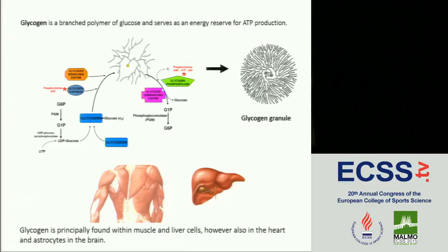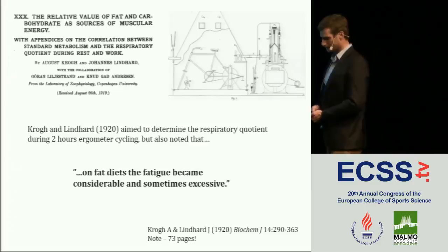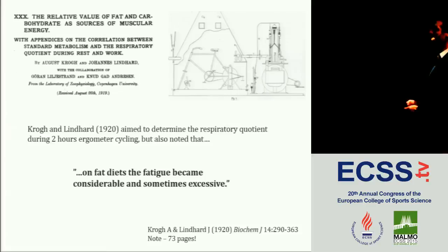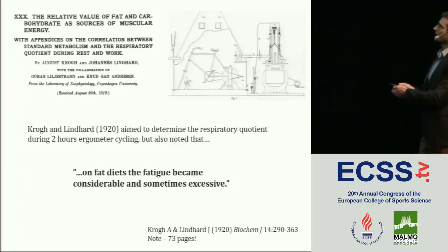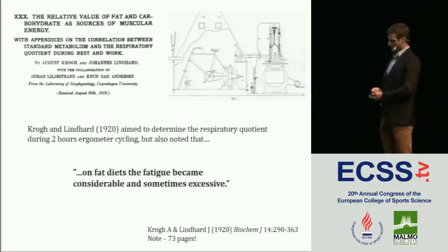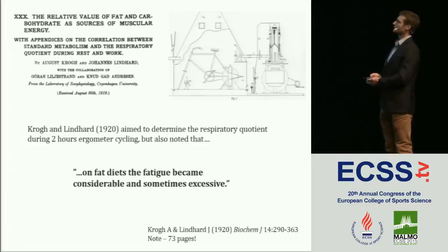The role of glycogen in performance was first noticed by Crowe and Linhardt in 1920, where they aimed to determine the respiratory quotient during ergometer cycling. In the discussion — more than 60 pages, which you're not allowed to do anymore — they actually say that on fat diets, fatigue became considerable and sometimes excessive. This was later confirmed by Christensen and Hansen in the 1930s, with very nice studies on the effect of diet on performance.